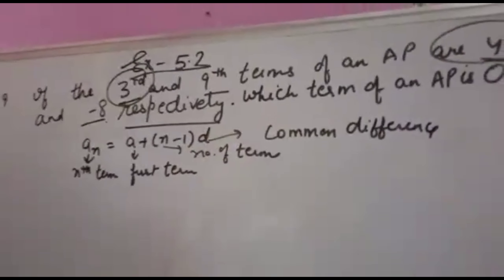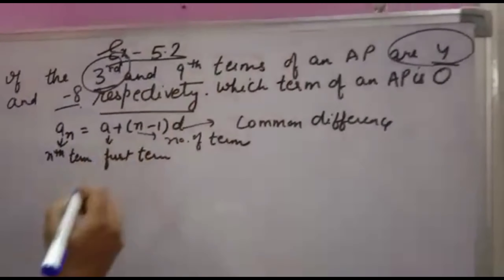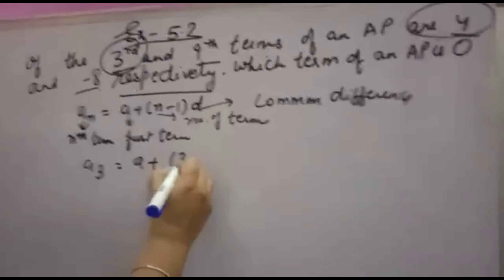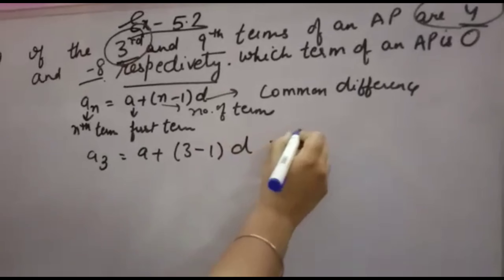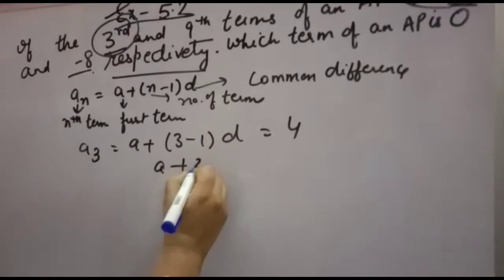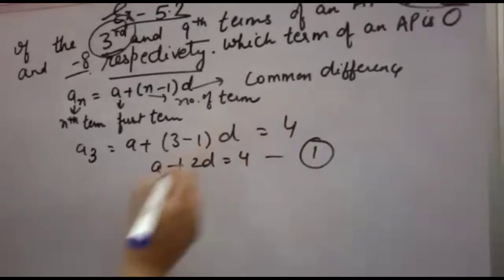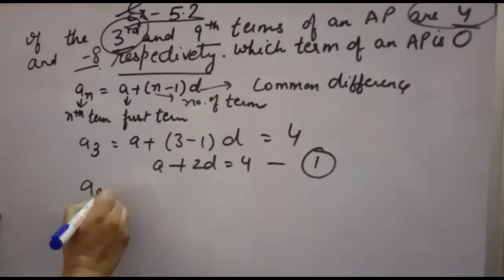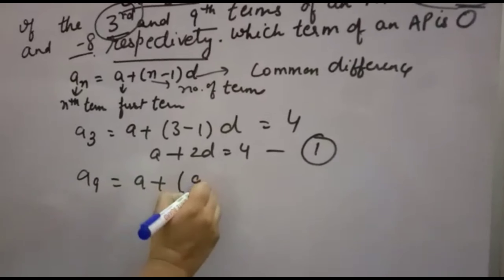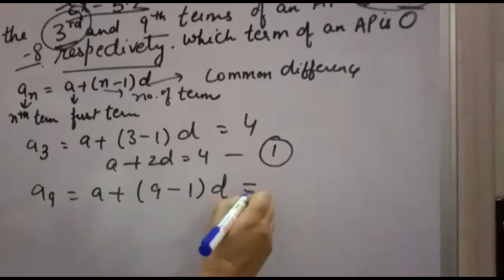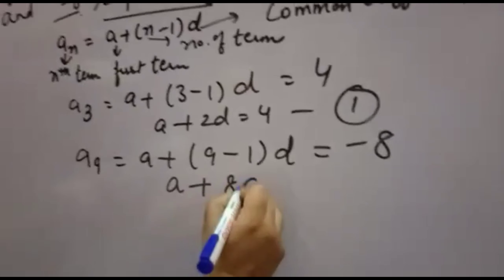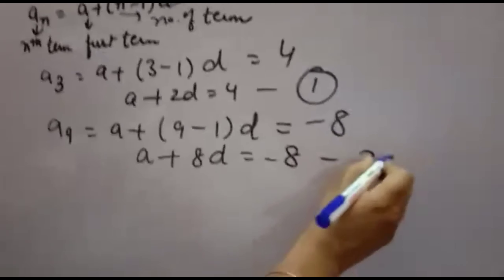The 3rd term is 4, so A3 = A + (3-1)D = 4, which gives us A + 2D = 4. This is equation 1. The 9th term is -8, so A9 = A + (9-1)D = -8, which gives us A + 8D = -8. This is equation 2.